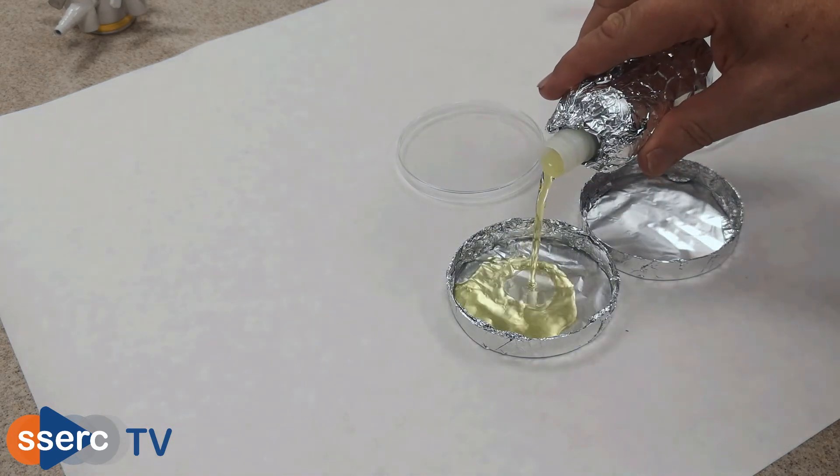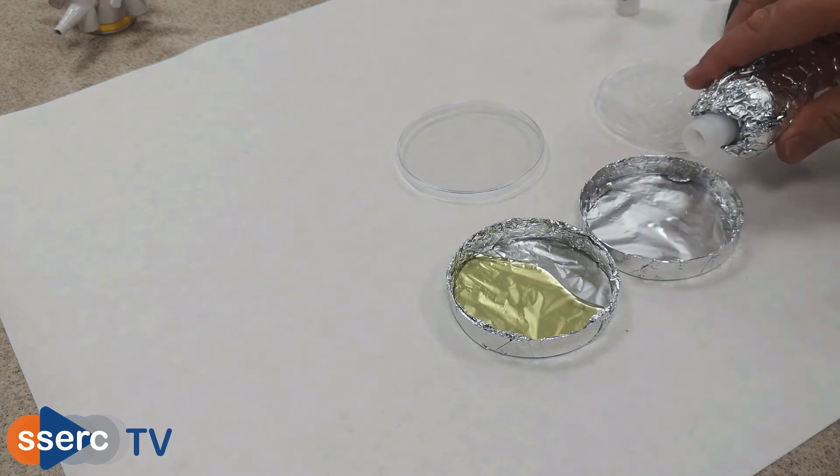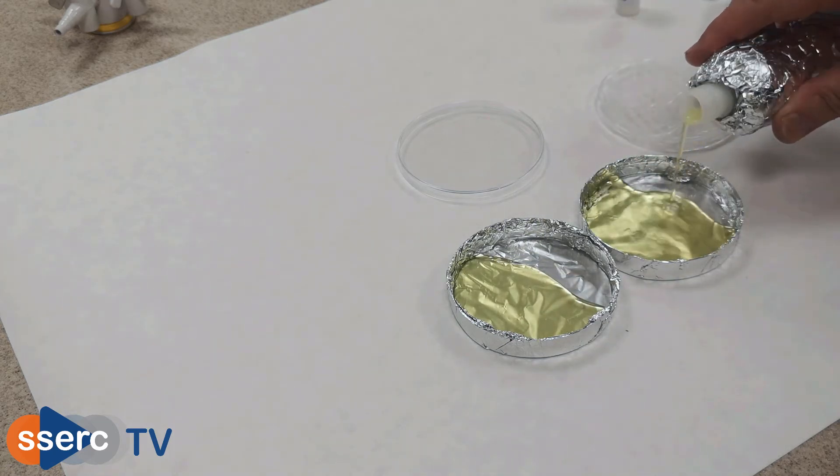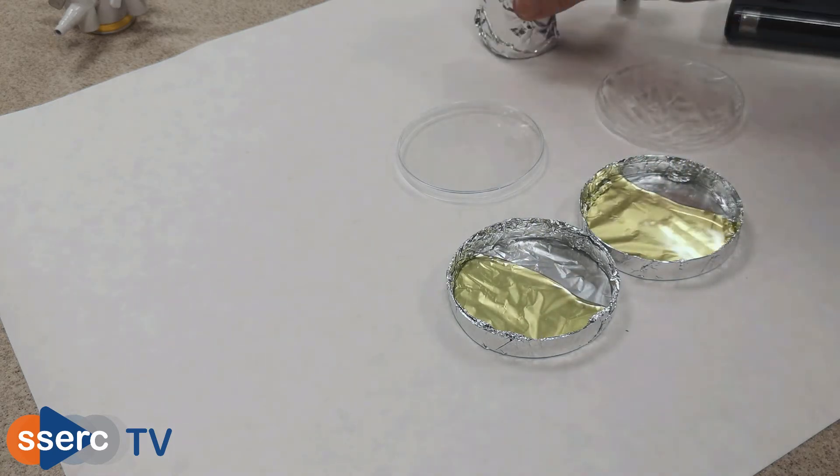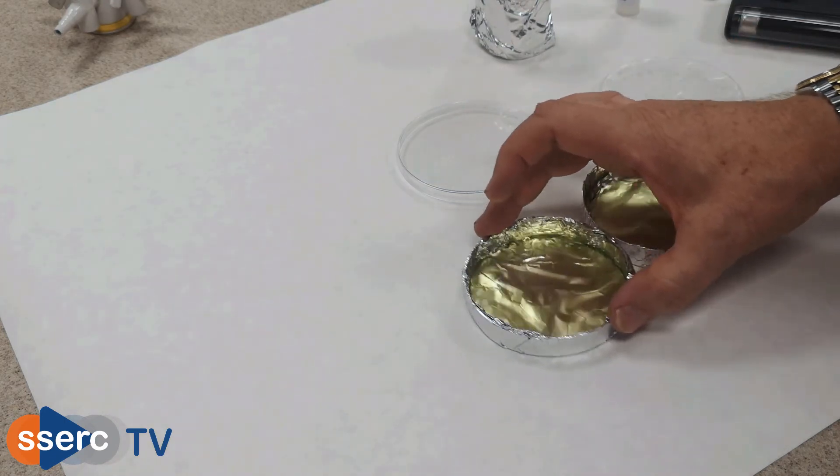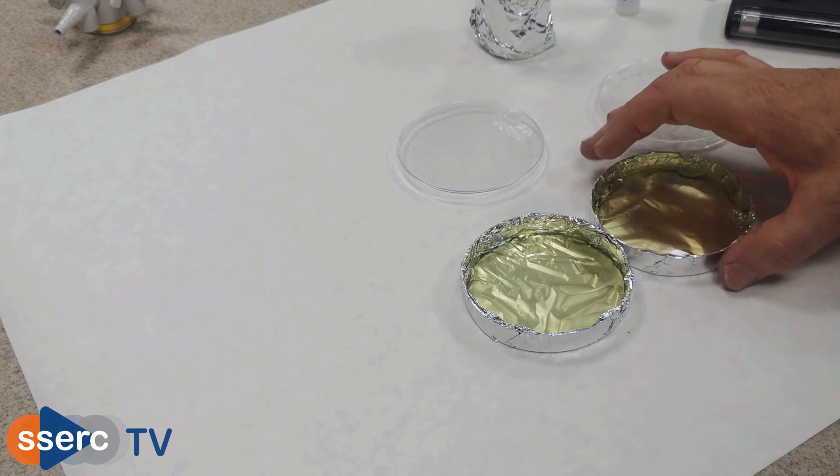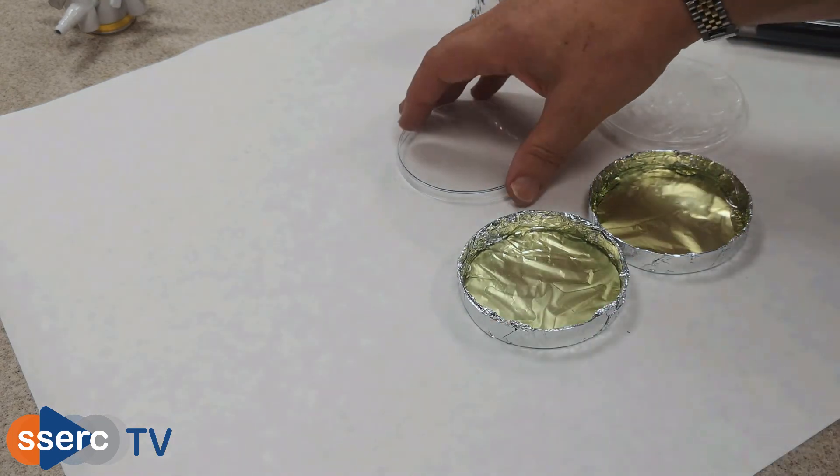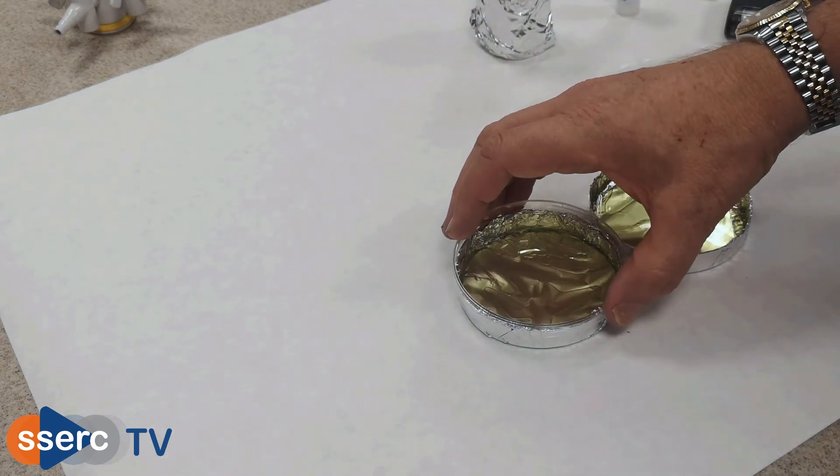Once you have the lids coated, pour a small amount of solution into each of your petri dish bases. The 80ml you have allows for 20 in each, which is enough. For the moment you can just do it by eye, as long as they're roughly the same all will be well. A quick swirl will get it spread evenly over the base.